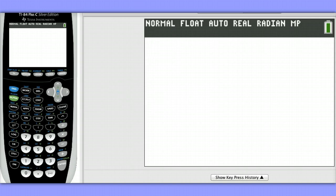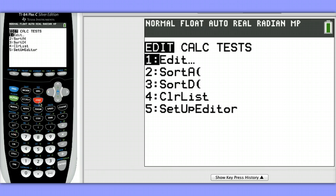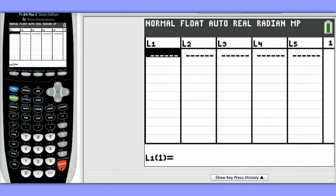We'll be entering our data in List 1 and List 2. To begin, hit Stat, hit Enter on Edit, and in List 1, enter the observed frequencies.